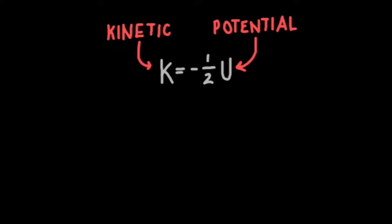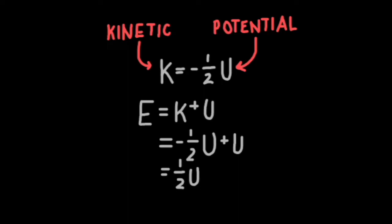The Virial Theorem states that the kinetic energy of a stationary system is equal to negative one-half of the gravitational potential energy. Since the total energy is equal to the kinetic energy plus potential energy, this also means that energy equals one-half of the potential energy. So how do we get here?